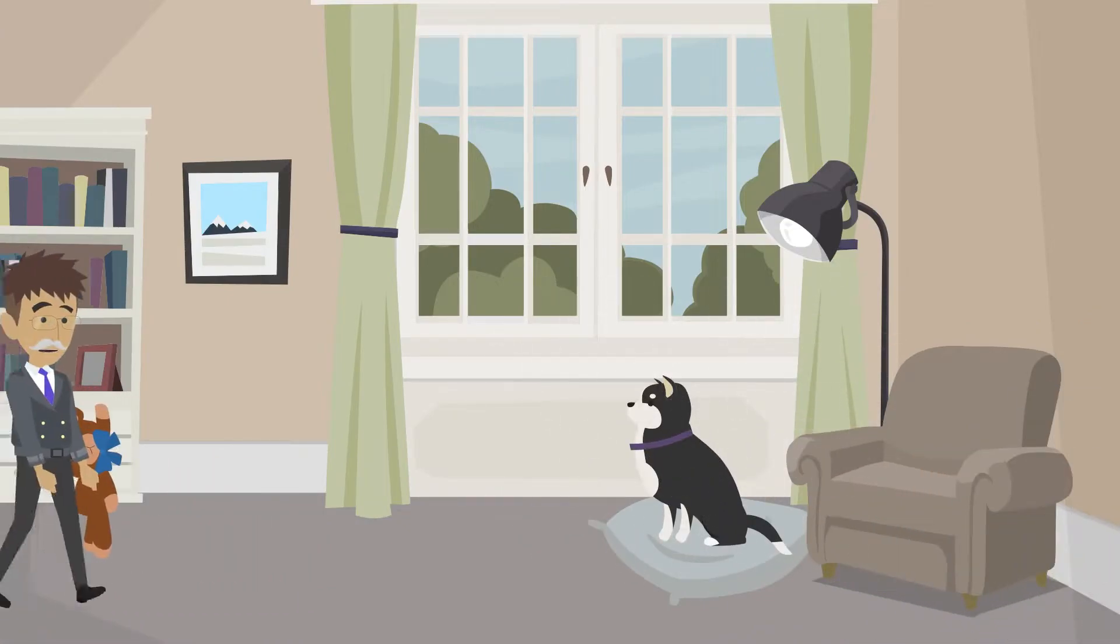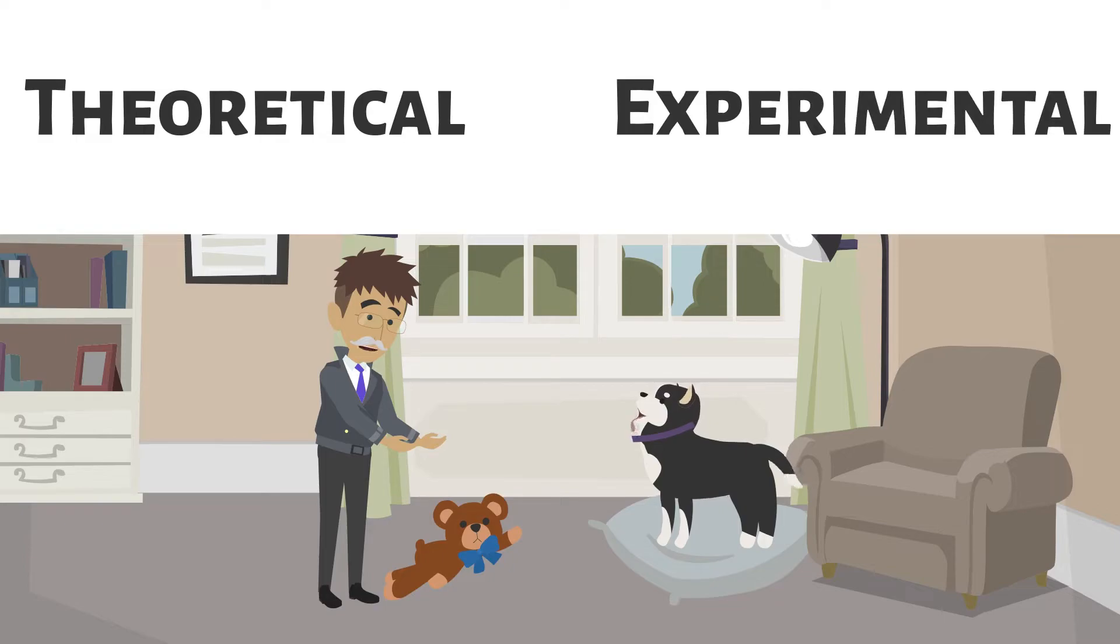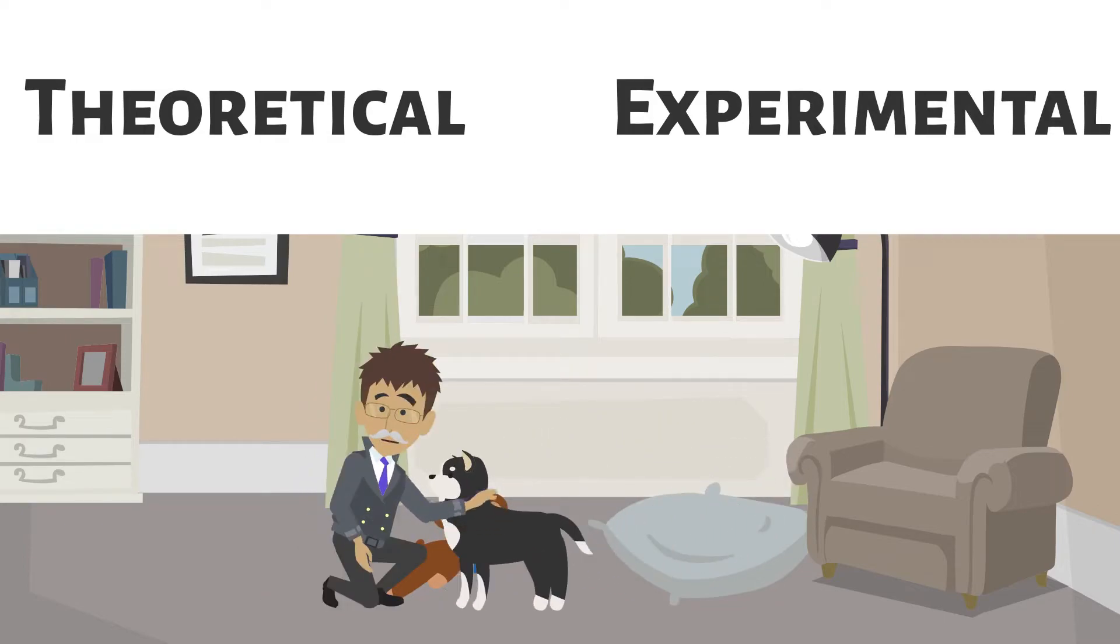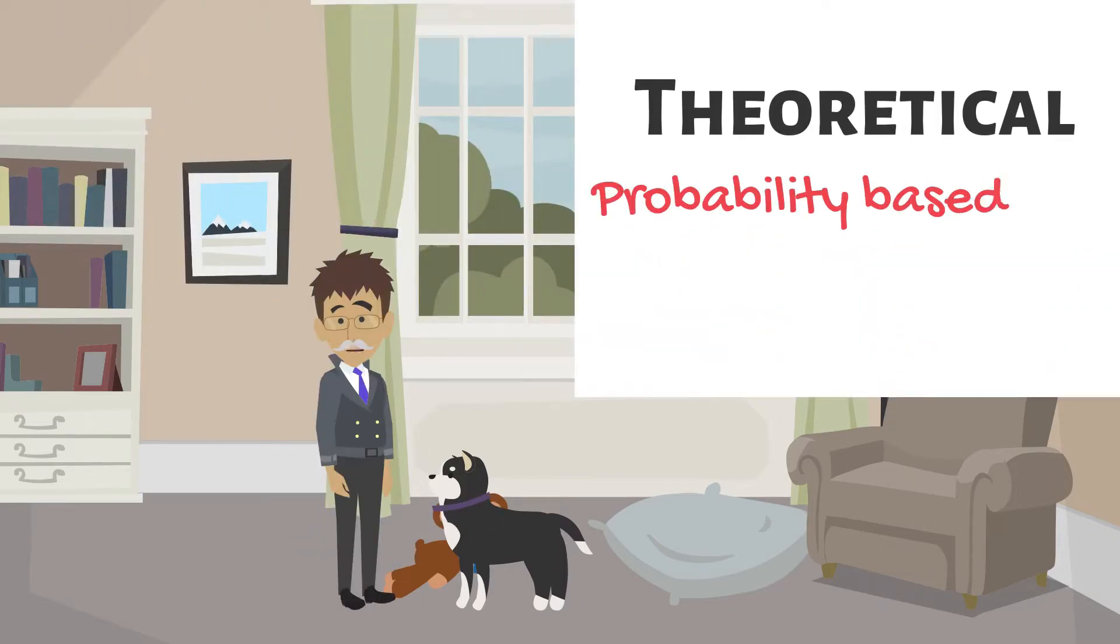There are two types of probability, theoretical and experimental. Both are ratios and are calculated similarly. First, theoretical probability is based on the possible outcomes.